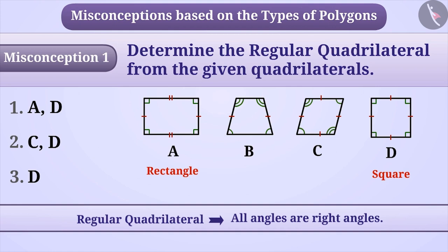Because of this misconception, they think that in the given figures, A and D are regular quadrilaterals, so they give the answer as option 1, which is an incorrect answer.